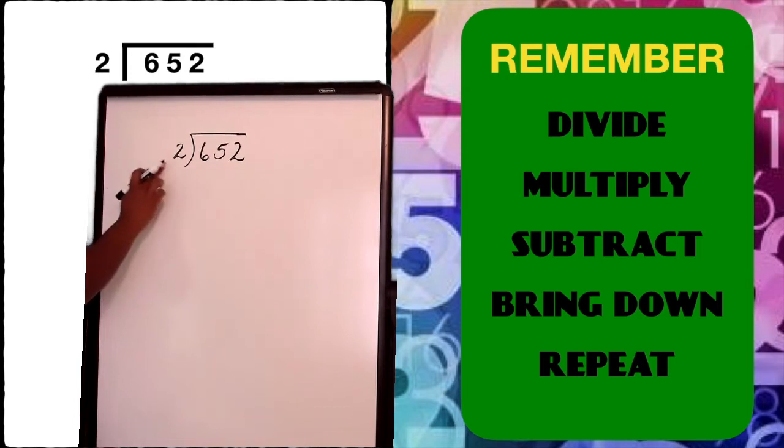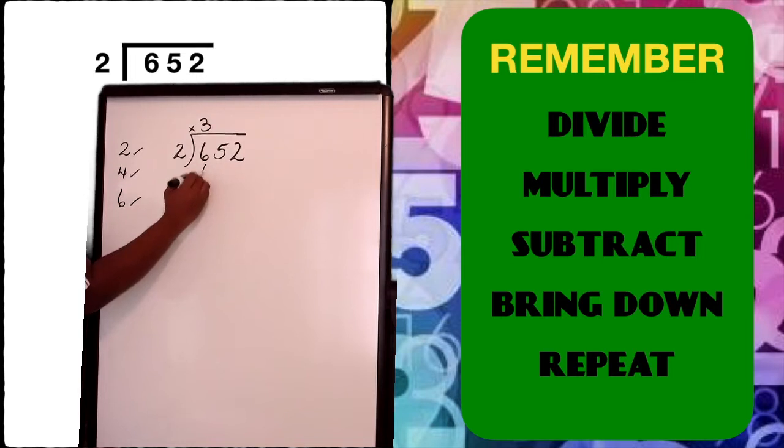To begin, we divide two into six. How many groups of twos are there in six? If we're counting in twos, that would be two, four, six. So that's one, two, three groups. Put my three in the working part. Now I multiply. Two times three will give me six. My next step says that I subtract. Six take away six leaves me with zero. And then I bring down. And so my new number is now five. After this, I must repeat. So I start all my steps all over again.